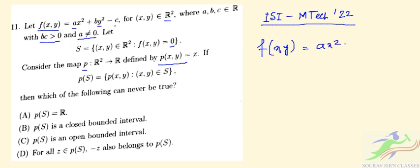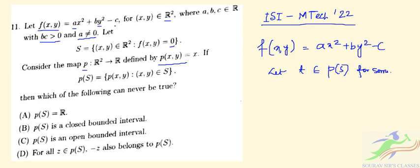For our case, f(x, y) = ax² + by² - c. Let t belong to p(S). So for some y, we can write: a·z² + b·y² - c = 0, where z represents the x-coordinate in S.